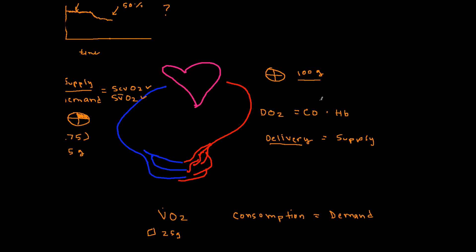There are three things that relate supply and demand in the body. Supply is determined by cardiac output and hemoglobin — ignoring the other small insignificant terms. Demand is VO2, which is regulated by things like wakefulness, muscle motion and muscle mass, shivering, fever, endotoxemia, malignant hyperthermia, or agitation. Your behavior and basic metabolism regulate VO2. So if mixed venous O2 saturation is dropping, it could be that demand has gone up or supply has gone down.